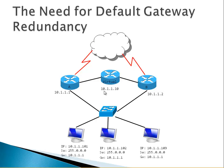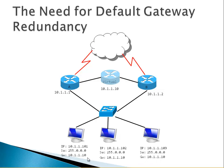Here comes redundancy. Router A and Router B can create a virtual router with IP address 10.1.1.10. They keep this virtual router alive — it doesn't physically exist, but Router A and Router B answer for it. We have something called active and standby: the first router is active and replies to any messages towards that virtual router. We change the gateway for the PCs from 10.1.1.1 to the virtual router address 10.1.1.10. Now when PCs send packets, they send towards the active router.